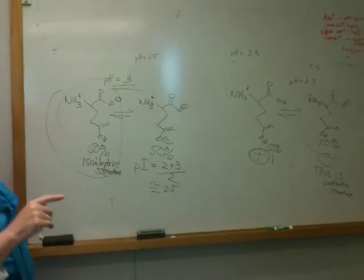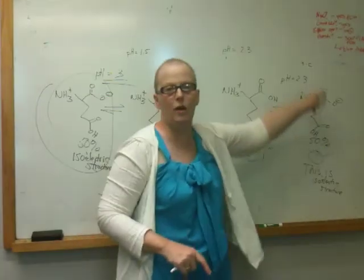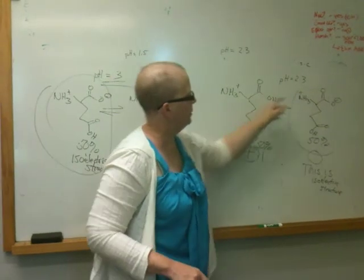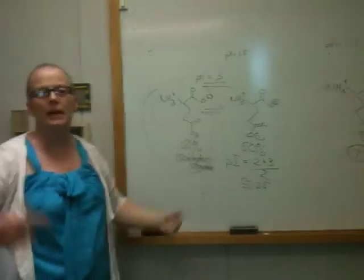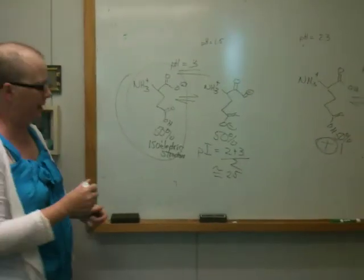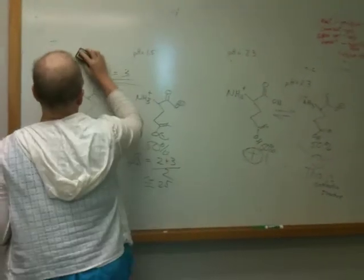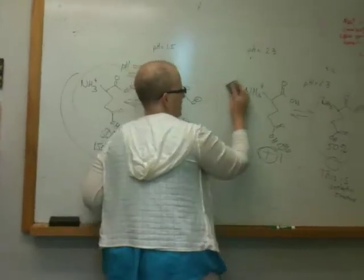So if I got the pH exactly at 2.5, I would have almost all of this structure. If I'm at 2.3, I have these two. If I'm at 3, I have these two. The pI occurs right in the middle. So let's keep going. So if we keep titrating, let's go one more step. So where's my next pit stop? My last pit stop is a pH of 9.